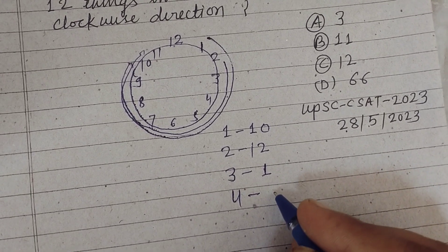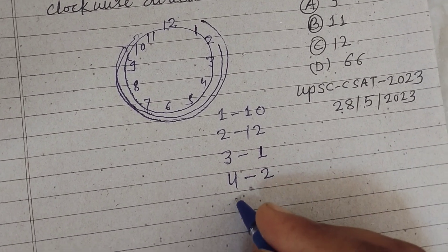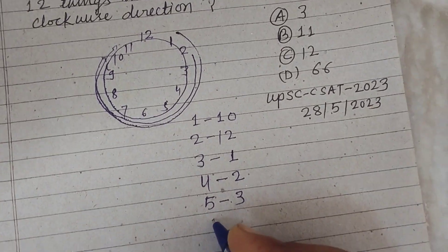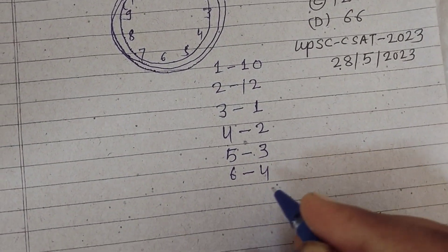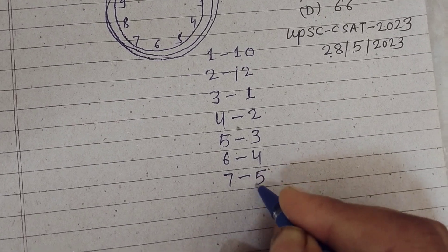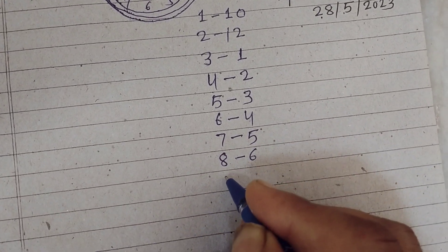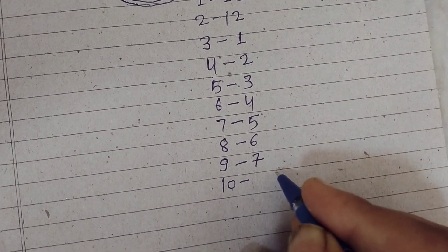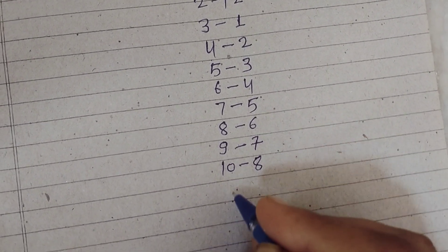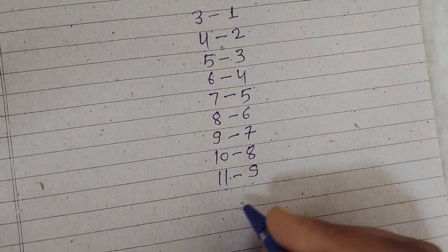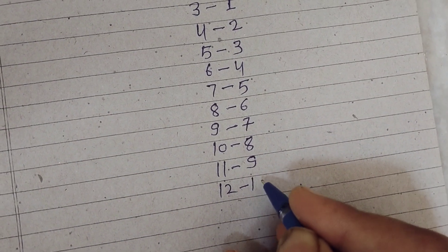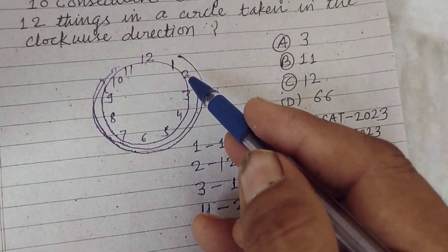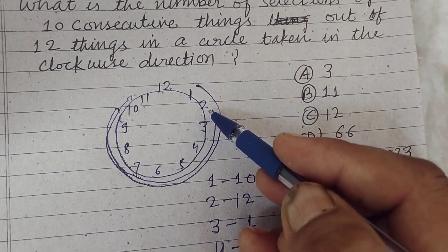4 to 2, 5 to 3, 6 to 4, 7 to 5, 8 to 6, 9 to 7, 10 to 8, 11 to 9, and 12 to 10. So these are the ways in which we take the selection or select the things, 10 things in clockwise direction in these ways.